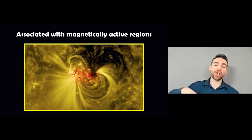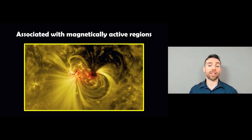You can see you've got these really tight, twisted magnetic field lines, and these are fairly characteristic with the same locations as sunspots. So generally associated with magnetically active regions.